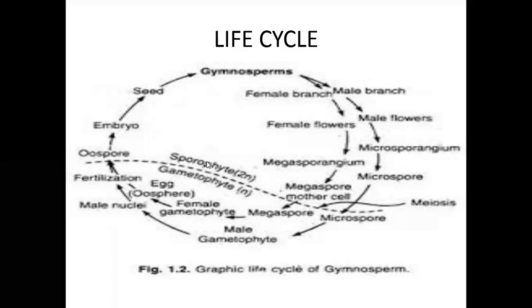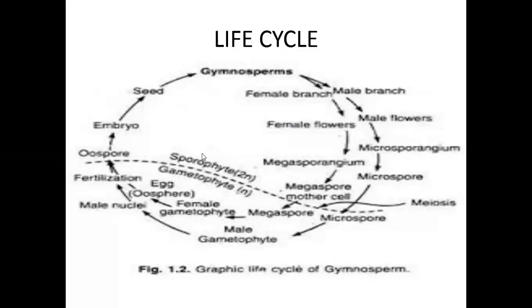The Diploid Sporophyte shows a root system, shoot system, leaves, and female reproductive organs as well as male reproductive organs. The Diploid Sporophyte and Haploid Gametophyte alternate with each other, and this type of life cycle is called Alternation of Generations.